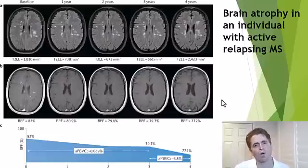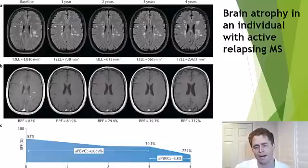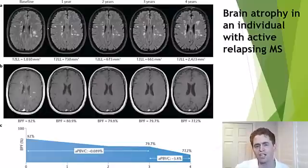It turns out we all have shrinking brains at about 0.2% per year just from normal aging, but some people with MS can have accelerated brain atrophy. If we can slow atrophy to the rate of normal aging, that would be a favorable outcome. There are also some biomarkers of multiple sclerosis.